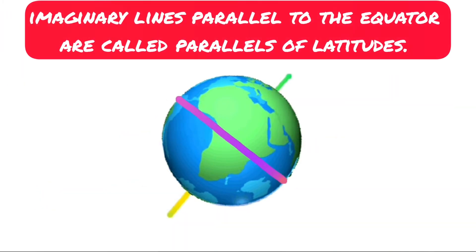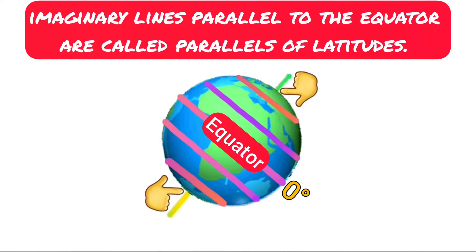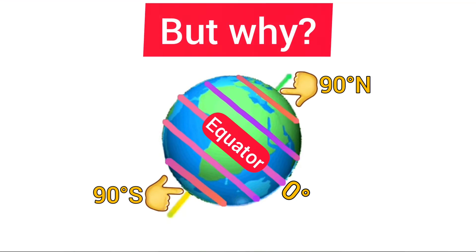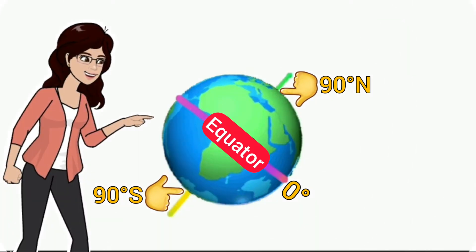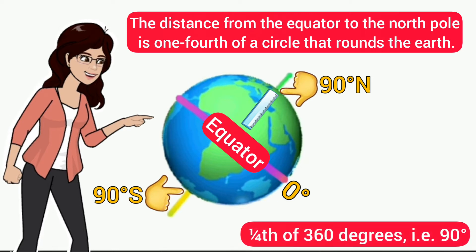Now let us draw some more imaginary lines parallel to the equator. All these lines are called parallels of latitudes. Latitudes are measured in degrees. The equator represents the zero degree latitude, and the north pole and south pole are marked as 90 degrees north and 90 degrees south respectively. Look at this globe — you can see that the distance from the equator to the north pole is one fourth of a circle that rounds the earth, or one fourth of 360 degrees, that is 90 degrees.